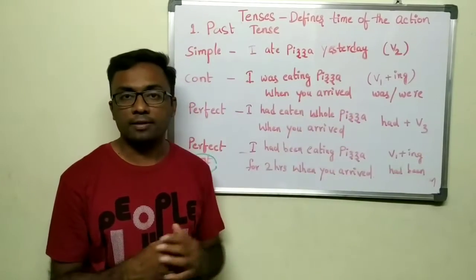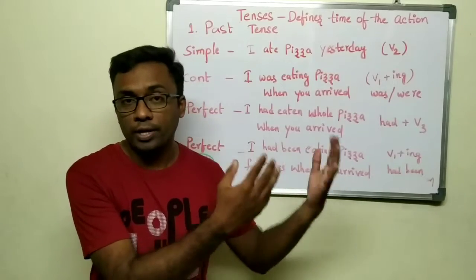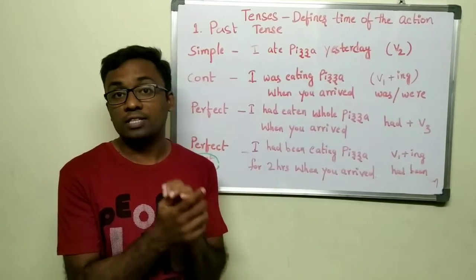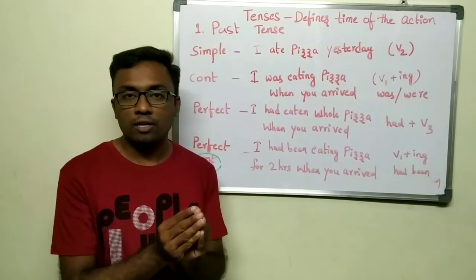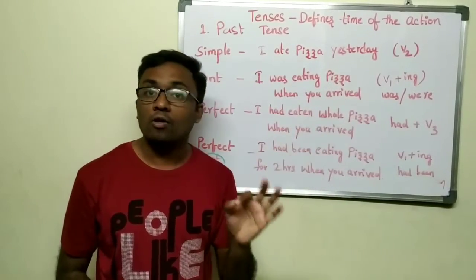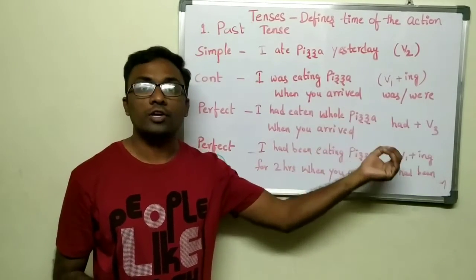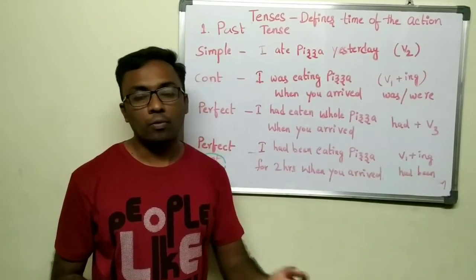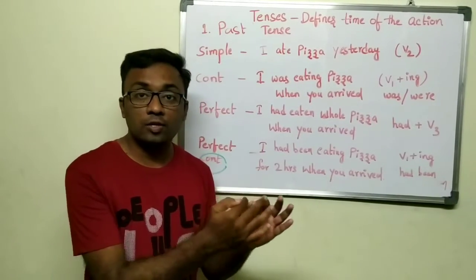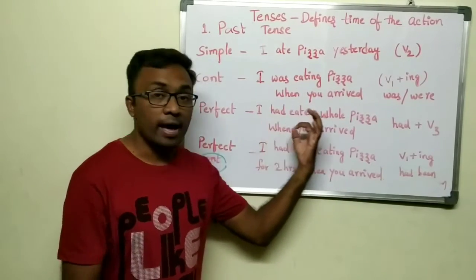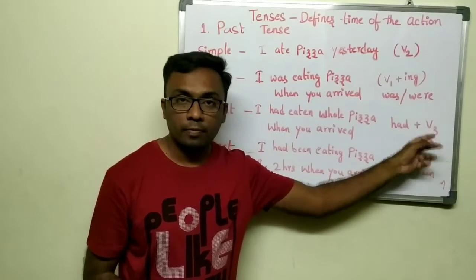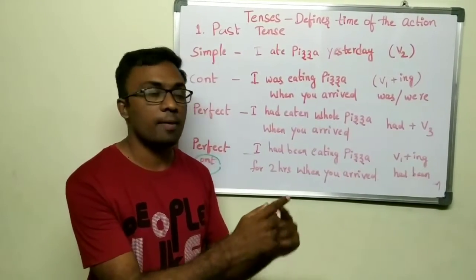You describe a past continuous action when someone asks what you were doing at a certain moment — 'I was eating pizza when you arrived.' An action which you were doing in the past when another action happened — that's why there are two verbs, and both are in V2 form. Past perfect tense: an action which just got completed when another action happened — 'I had eaten the whole pizza when you arrived.' When there is perfect tense, the verb is V3.